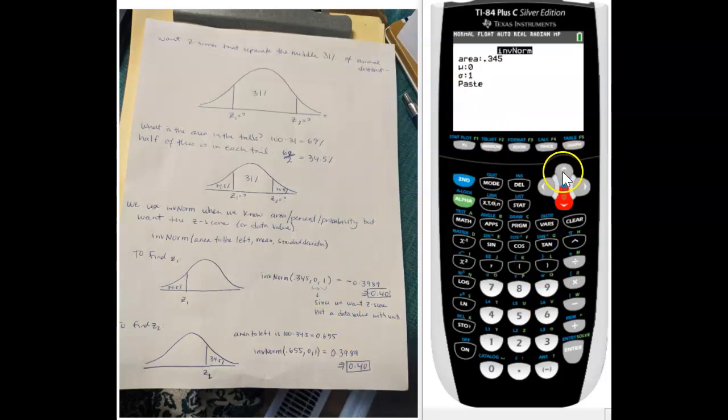If you have the most up-to-date TI-84s, you may have another option that says like which region, like the left, right, or center, and you can go through and say what you want. So here, if I use the point 345, I would have said left, because that's the area to the left. You also, if you want to do center, you could do point 310 mean, and then you say the area in the center, and then it'll give you two different z-scores that you can go through and look at.